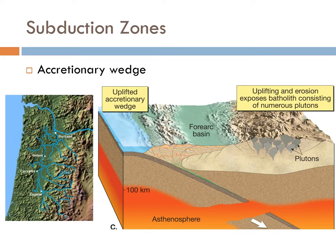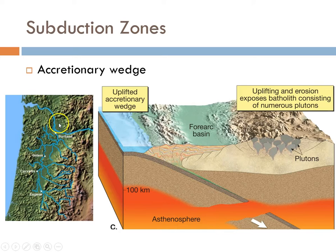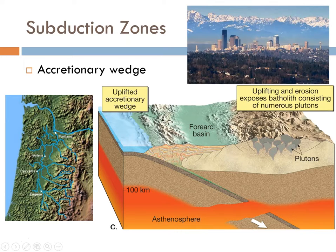A beautiful example of this is the Cascade Range. You've got the Olympic Mountains along the coast of the Pacific Northwest — if you drop down into that forearc basin, you've got areas like Portland, Salem, and Eugene, Oregon, which is that lower-elevation flatter forearc basin area. And then over here are the Cascade Range volcanoes, much higher. The Olympics are an accretionary wedge that's been folded and pushed up high enough to be exposed behind Seattle. They're so high they actually change the weather patterns, producing temperate rainforest with hundreds of inches of rain in some locations.